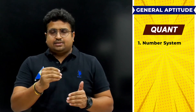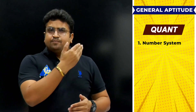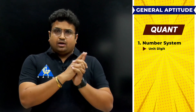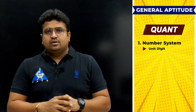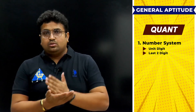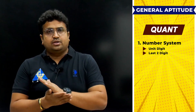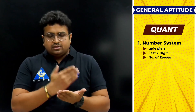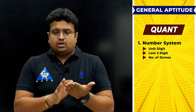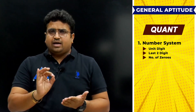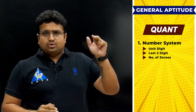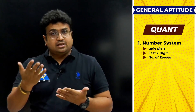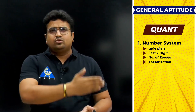Every single chapter is divided into multiple parts. For example, in the number system I've covered unit digit value — a topic that has already appeared in GATE exams. I've also included last two digits, which hasn't been asked yet in GATE but will definitely come in the near future. Similarly, the number of zeros at the end is another pattern that hasn't been asked yet but is expected to appear soon. Additionally, there are topics like factorization, divisibility rules, and many other topics.